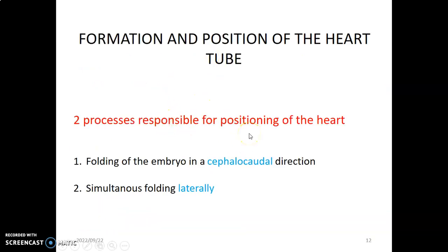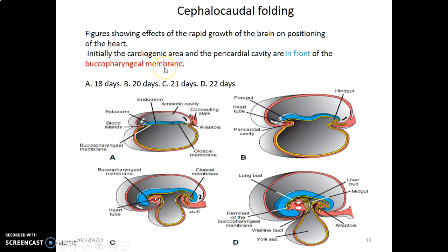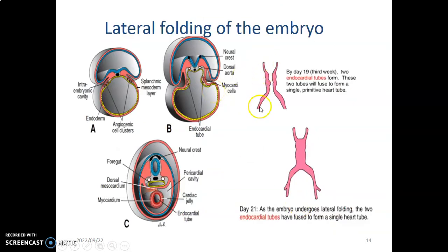Two processes are responsible for positioning of the heart: cephalocaudal folding and lateral folding. These move the heart from the cardiogenic zone cranial to the neural plate into the thoracic region. With cranial folding the heart is brought towards the thoracic region, and with lateral folding the two tubes are brought together. As lateral folding occurs, the two tubes fuse. This occurs at day 19, within the third week, producing one single heart tube.